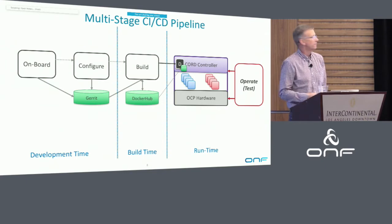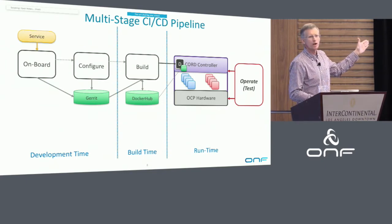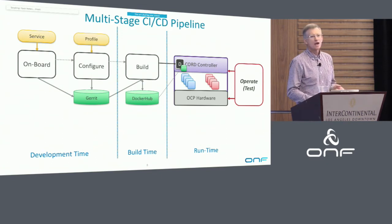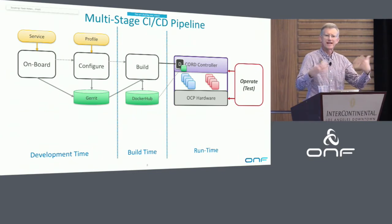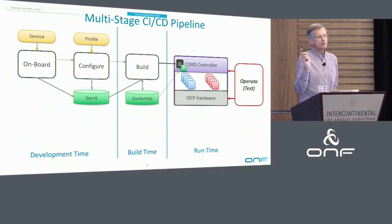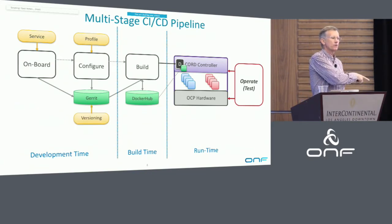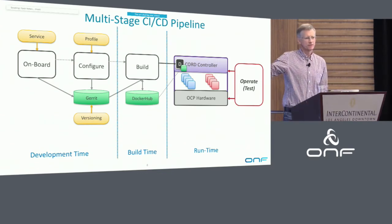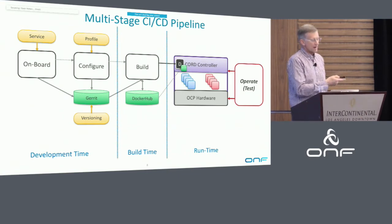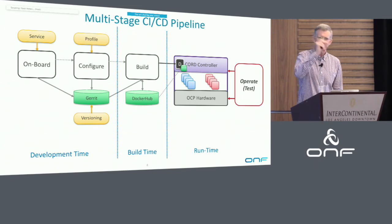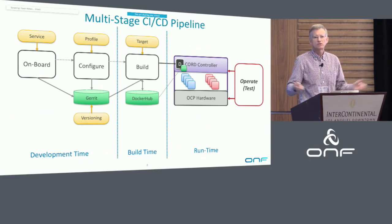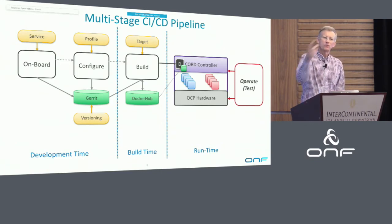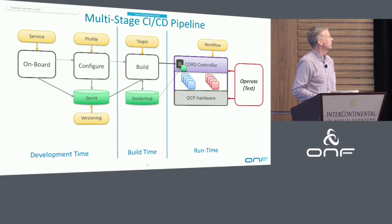The other way to look at it is we have a multi-stage pipeline. There's an onboarding time where we onboard services — you onboard a spec for a service. There's a configure time where I onboard a profile, which is really just a set of services. What we've recently figured out is that a set of services is itself a service — it's a nested recursive definition. Those get stored in GitHub or Gerrit, and I can independently version each one. These services all evolve at different timescales; they don't all have to evolve lockstep. At build time I give you a target — sometimes we build for physical pods, sometimes for development or emulated environments. Once I've done all of that, I have something I can deploy and run different workflows through it.